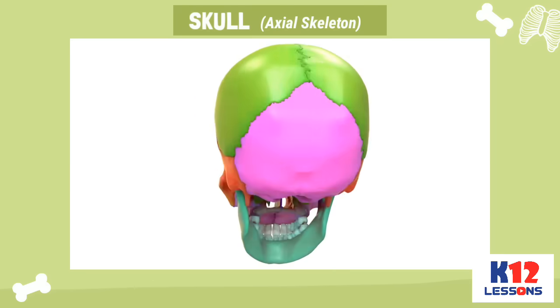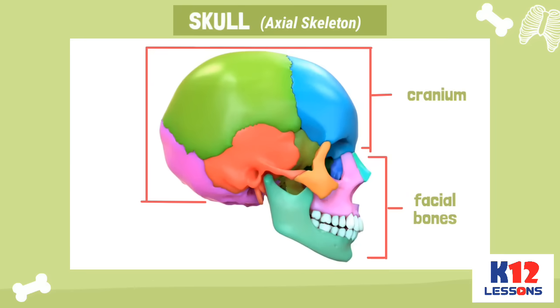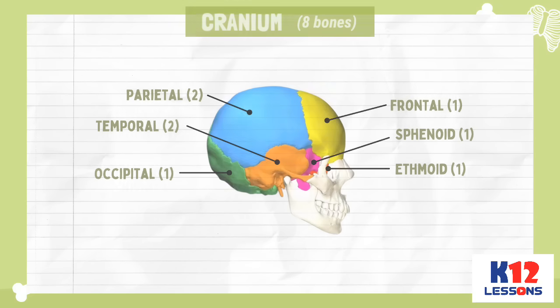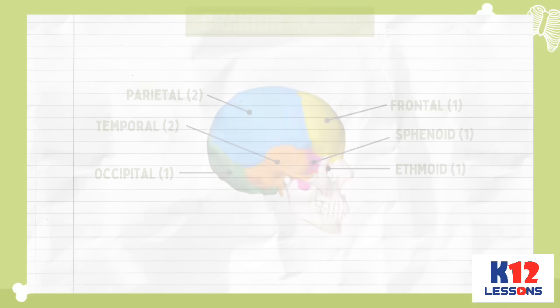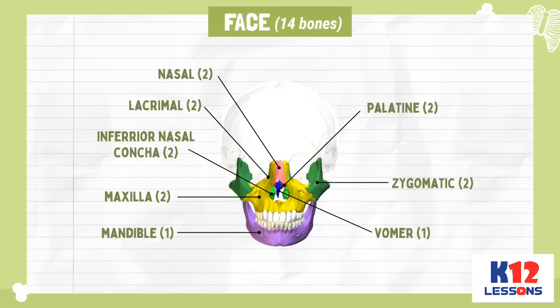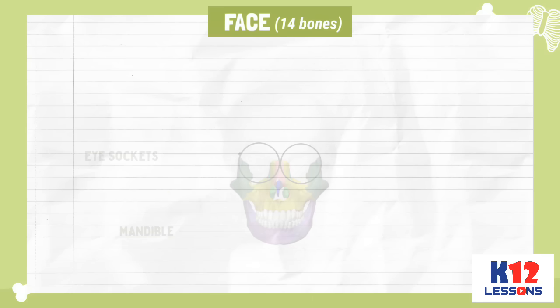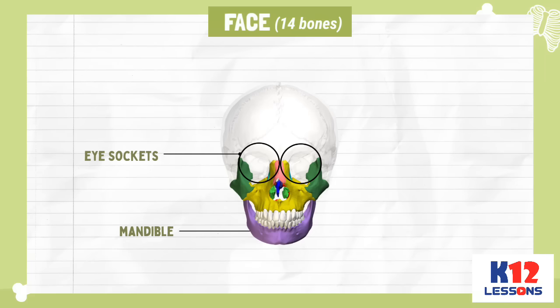One of the axial skeletons is the skull, which consists of the cranium and facial bones. The cranium is made up of eight bones joined together to form a rigid case that protects the brain. The face is made up of 14 facial bones. The eye socket protects the eyeball, while the mandible or jawbone is a movable bone that holds the teeth.